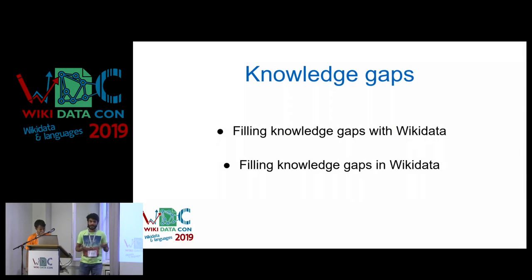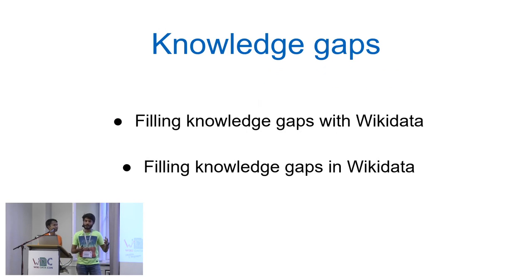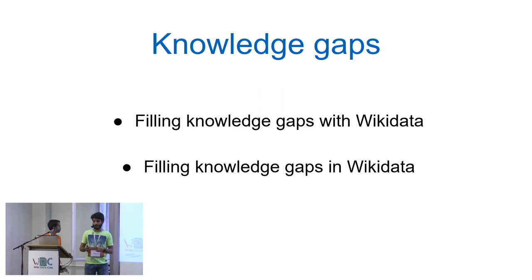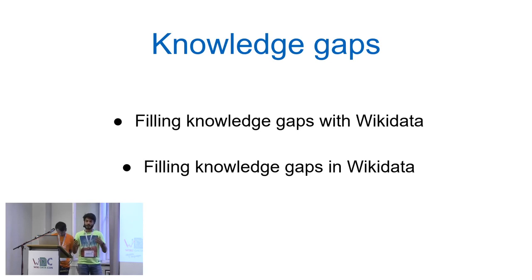So what are knowledge gaps? As the name suggests, it is a gap in our existing knowledge. But in terms of Wikidata, we're looking at knowledge gaps in two different aspects. One is, how can Wikidata help us in filling the knowledge gaps in other Wikimedia projects? And the second is, how do we fill the knowledge gaps within Wikidata?